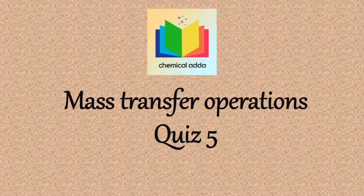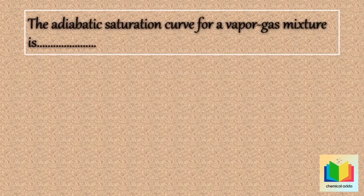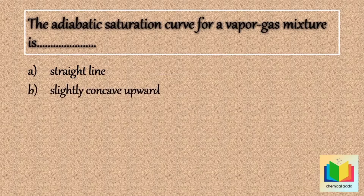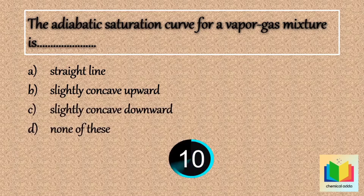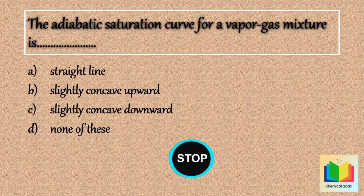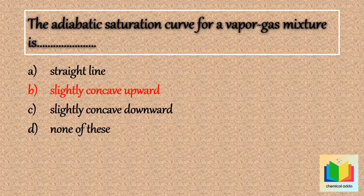Let's see the first question. The adiabatic saturation curve for a vapor gas mixture is: option A — straight line, option B — slightly concave upward, option C — slightly concave downward, option D — none of these. The answer is option B: slightly concave upward.